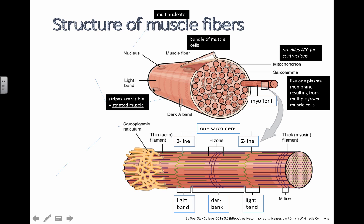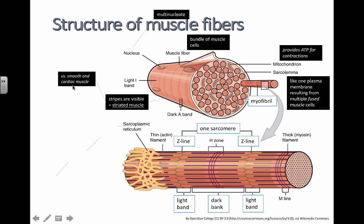These muscle fibers are actually striped, and the fancy word for striped is striated. Compare this with smooth muscle, found in your digestive system and involved in peristalsis, and cardiac muscle in your heart — which does not have stripes. This type of muscle we call striated muscle.